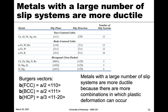The Burgers vector is a fraction of the slip direction — in each case it's either the lattice parameter divided by two or divided by three. That's the magnitude of deformation that occurs with each step of dislocation motion.